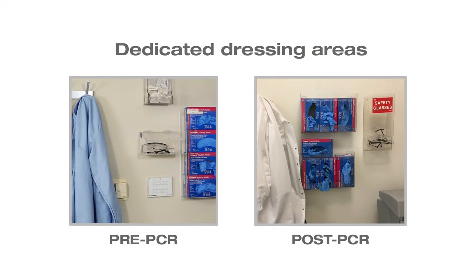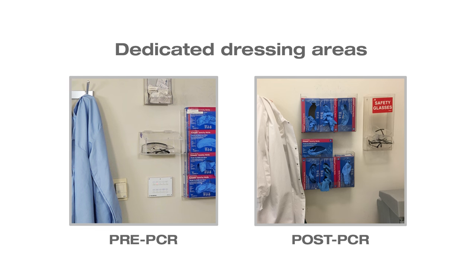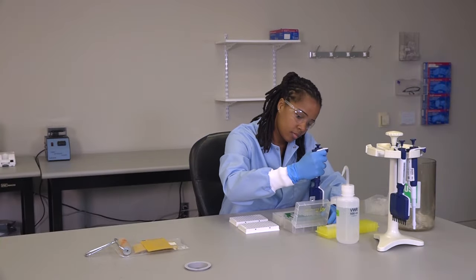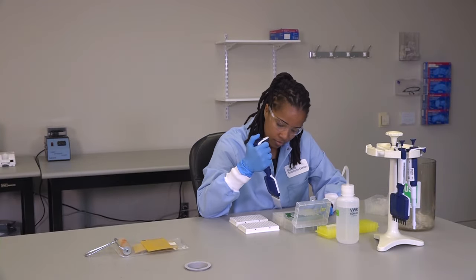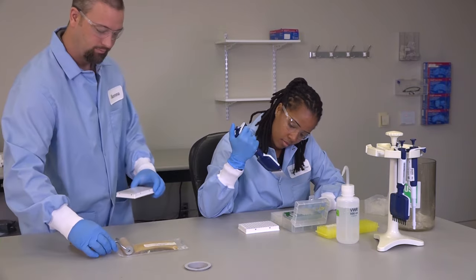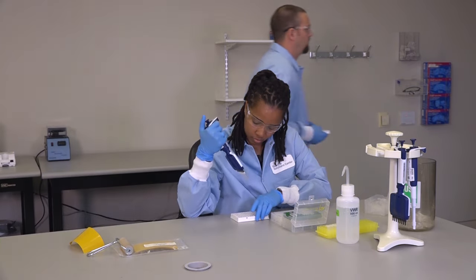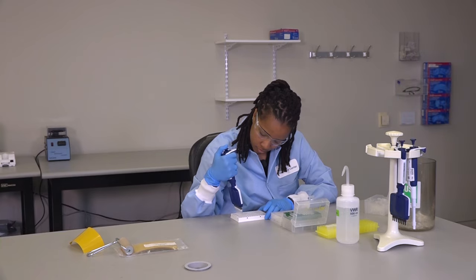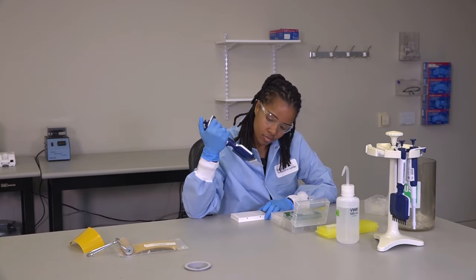Additionally, use dedicated dressing areas near the entrance and exits of both the pre- and post-PCR areas where PPE can be applied or removed before entering or exiting either area. Sort and aliquot all reagents shared between pre-PCR and post-PCR in the pre-PCR area. Carry post-PCR reagents to the post-PCR area after they have been sorted in the pre-PCR area.